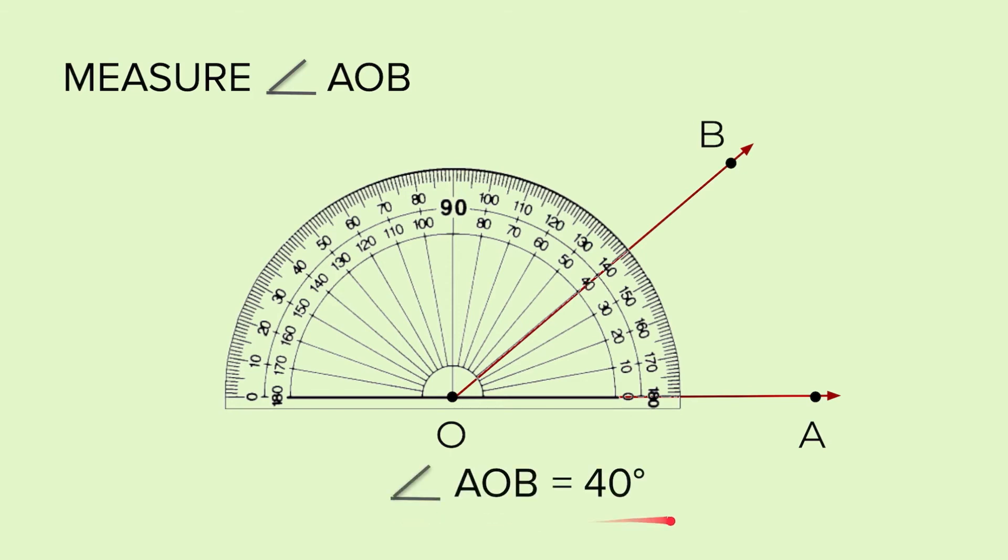So angle AOB is equal to 40 degrees. This small circle on top is the symbol of degrees.